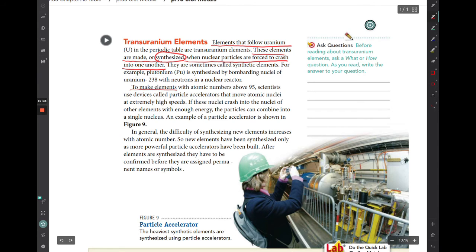So, for example, to make elements with atomic numbers above 95, scientists use a device called particle accelerators that move the atomic nuclei at extremely high speeds. When there's enough energy, the particles can combine into a single nucleus, and they're showing you an example of a particle accelerator down there.